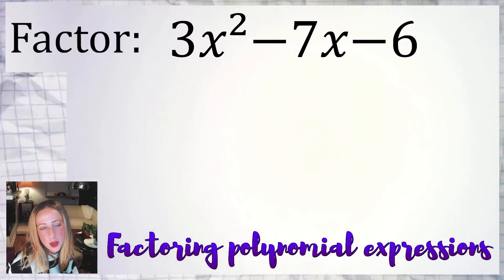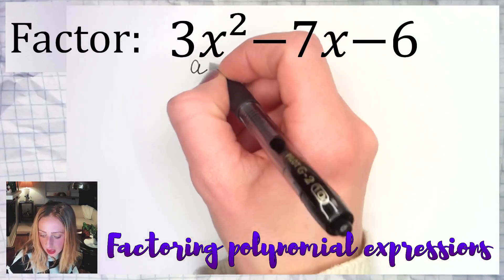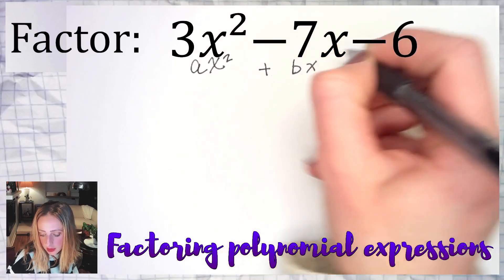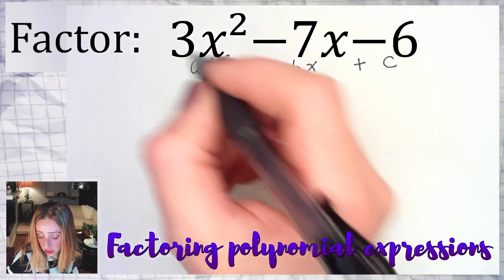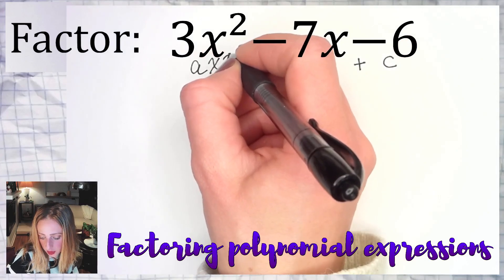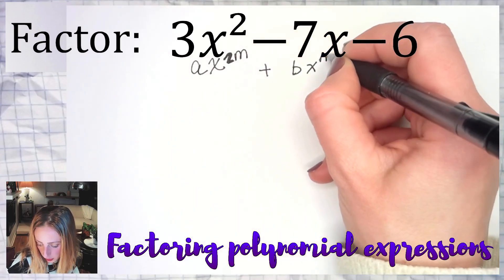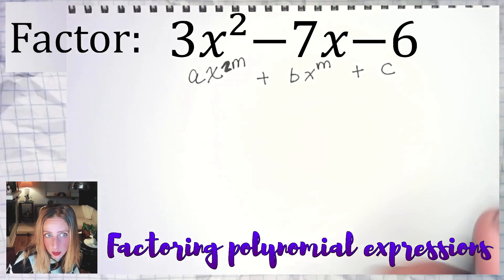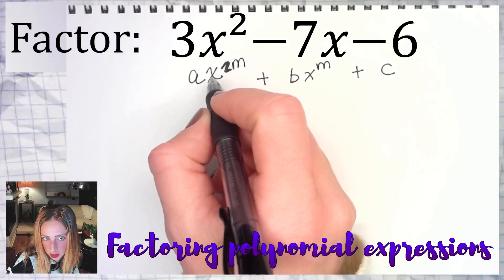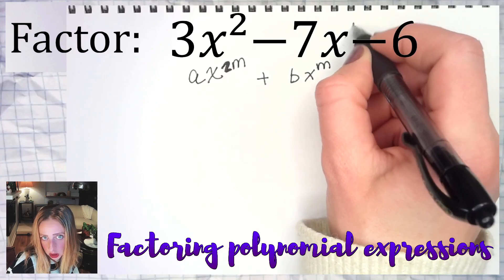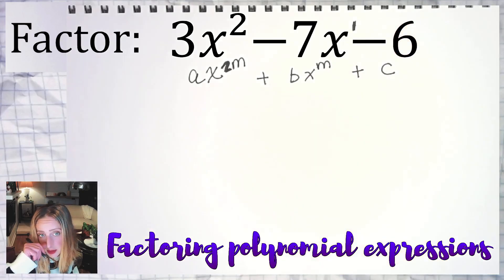Hello everyone, in this example we are factoring a quadratic trinomial, which is a polynomial of the form ax squared plus bx plus c. We can call anything a quadratic type so long as the exponent on the leading term is double that of the middle term exponent — and it is, because the middle term has an invisible exponent of 1, and the constant term is really x to the 0, which equals 1, not x to the 1.